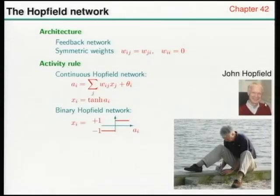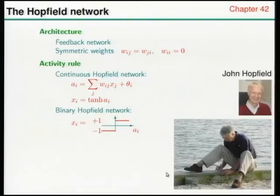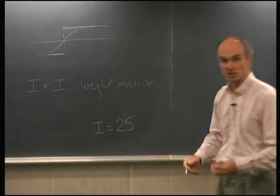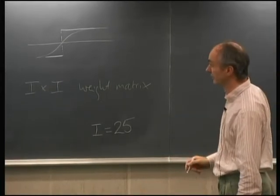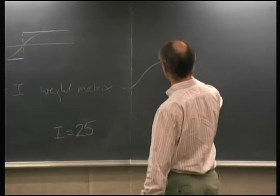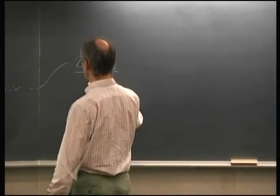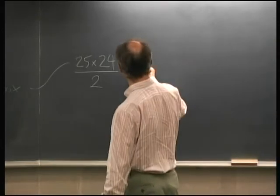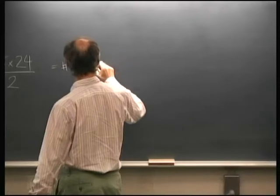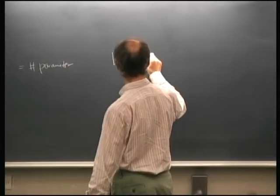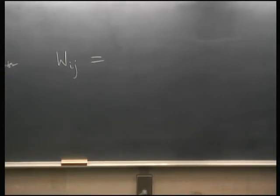Here's John Hopfield, who now works at Princeton in retirement. To do content addressable memory we need a rule for setting all the weights. In our example with 25-dimensional binary patterns, we have 25 neurons, and the number of weights is 25 times 24 over 2 — no self-connections, and they're symmetric — giving roughly 300 parameters.